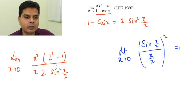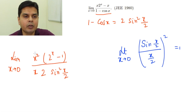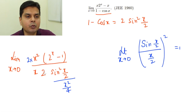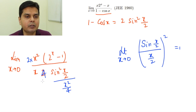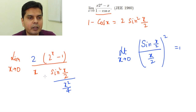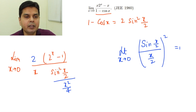I need to bring sin²(x/2) into the form [sin(x/2)/(x/2)]². To do that, I need x²/4 in the denominator. Since there is already a factor of 2, I multiply by 2 to make it 4, giving x²/4. The x² from the numerator and this x² cancel, the factor of 4 is accounted for, and what remains in the denominator is 2.